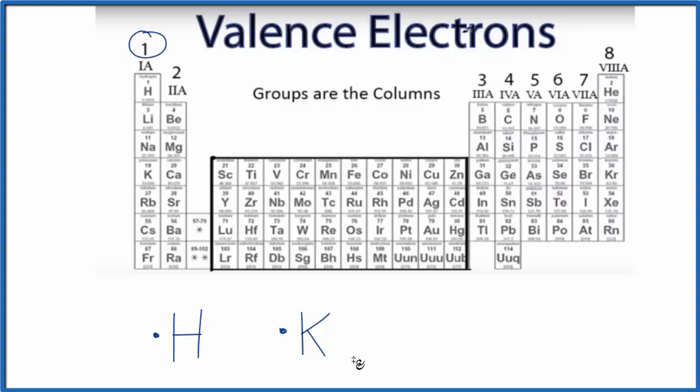Of course, overall it has more electrons, but the valence electrons are the ones in the highest energy level. Think about it as the outer shell. So we could even write francium here. That has one valence electron because all of these are in group one.